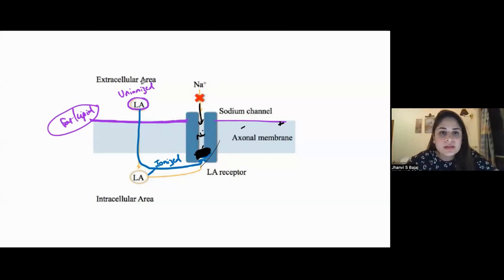Just remember that the local anesthetics initially is in the unionized form. Later to cross this lipid soluble nerve membrane, it has to be in the unionized form. So, once it enters inside, it gets ionized and then it attaches to the sodium channel from inside in the unionized form. Okay.